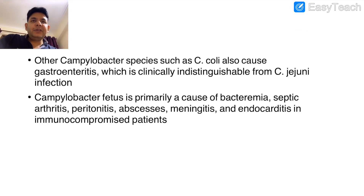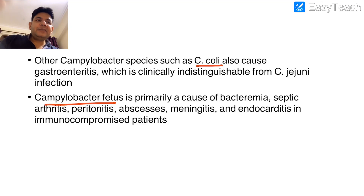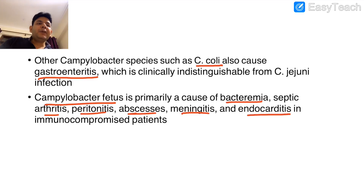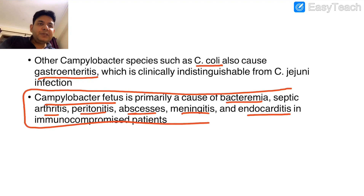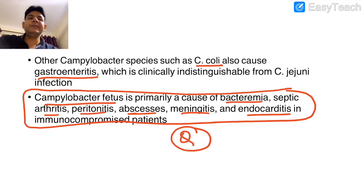For PGI-level questions, they might focus on other Campylobacter species: Campylobacter coli and Campylobacter fetus. Campylobacter coli, as the name suggests like E. coli, mostly associates with gastroenteritis. Campylobacter fetus can directly cause bacteremia, septic arthritis, peritonitis, abscess, meningitis, and endocarditis. So if jejuni is not in the options but fetus is, you can still go for Campylobacter.